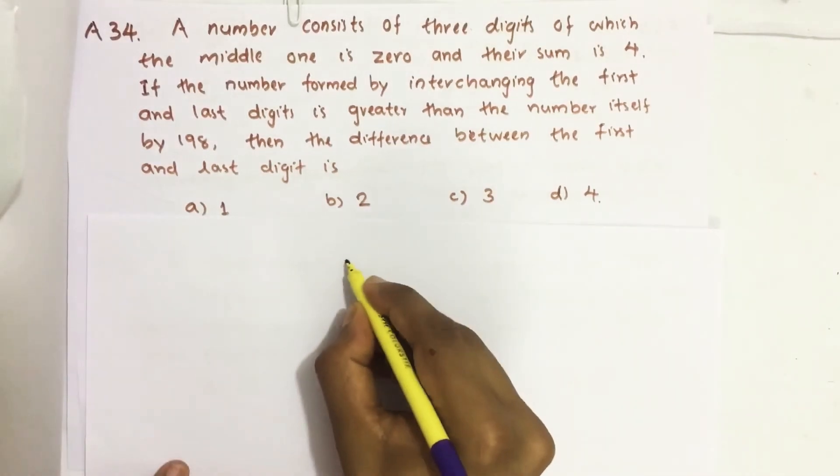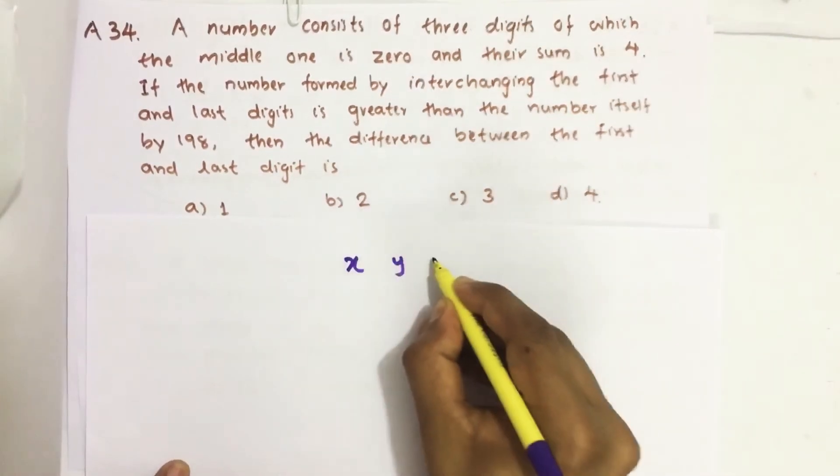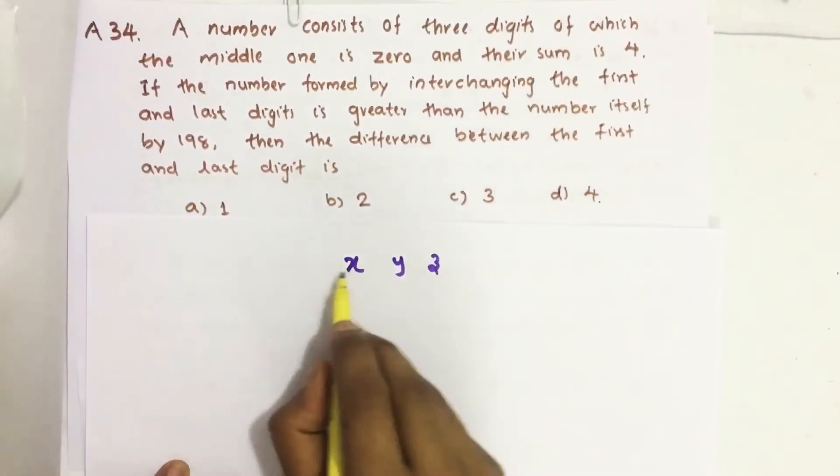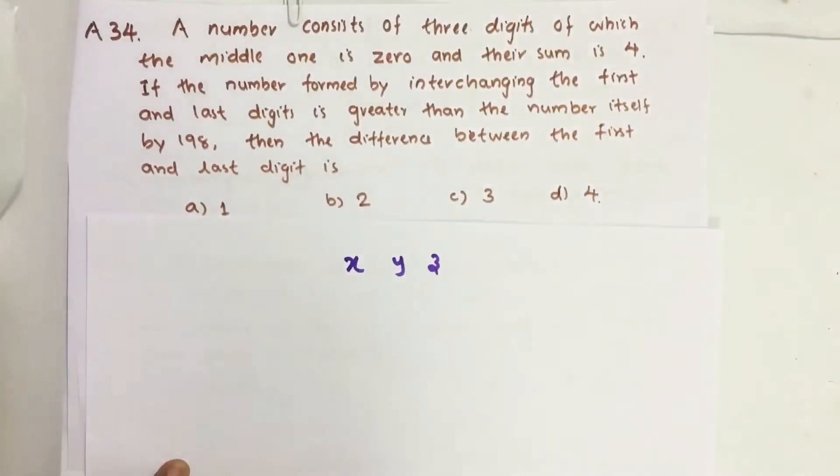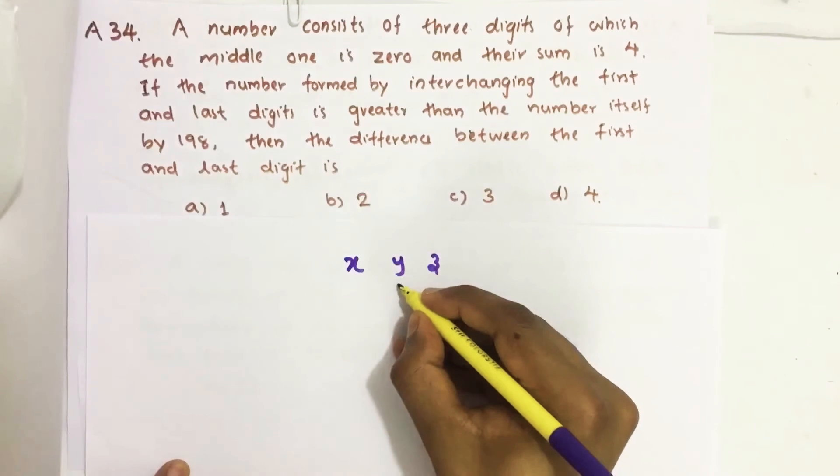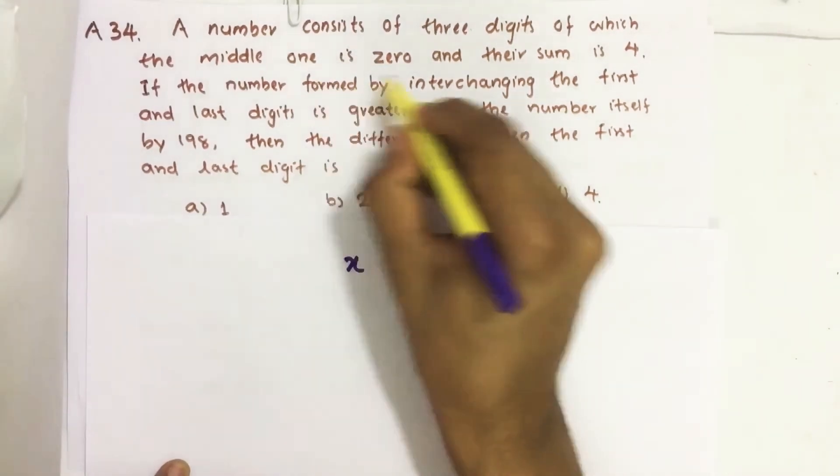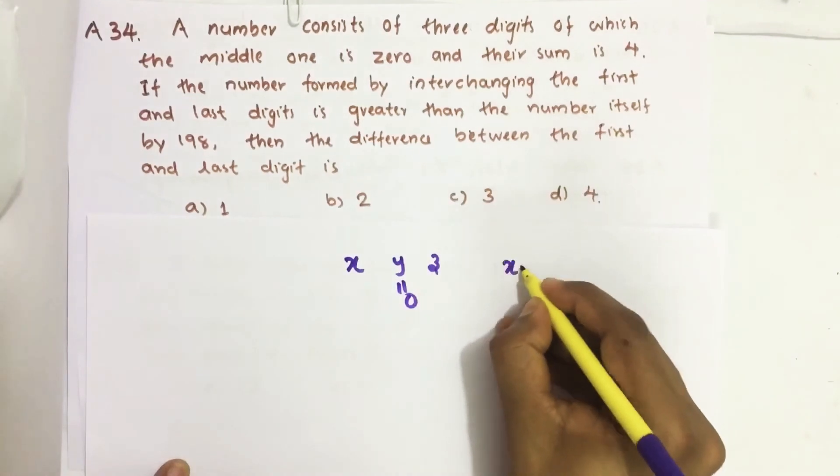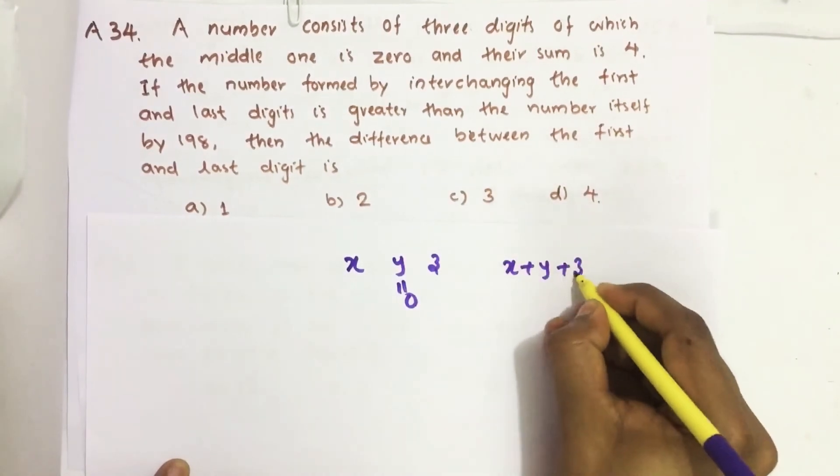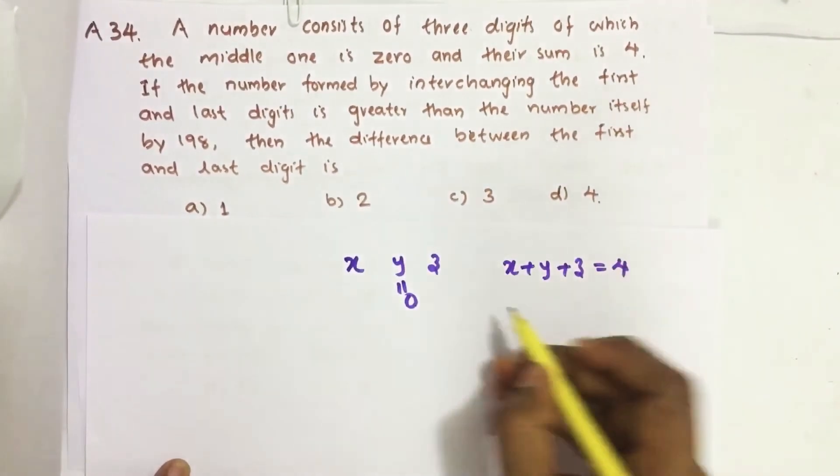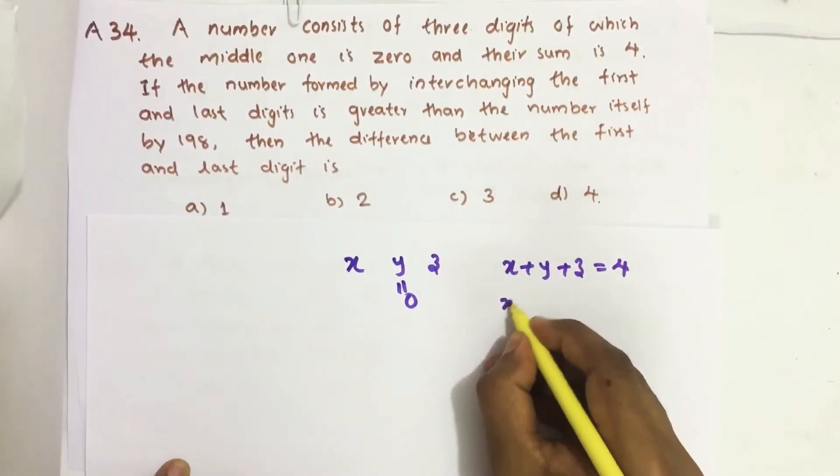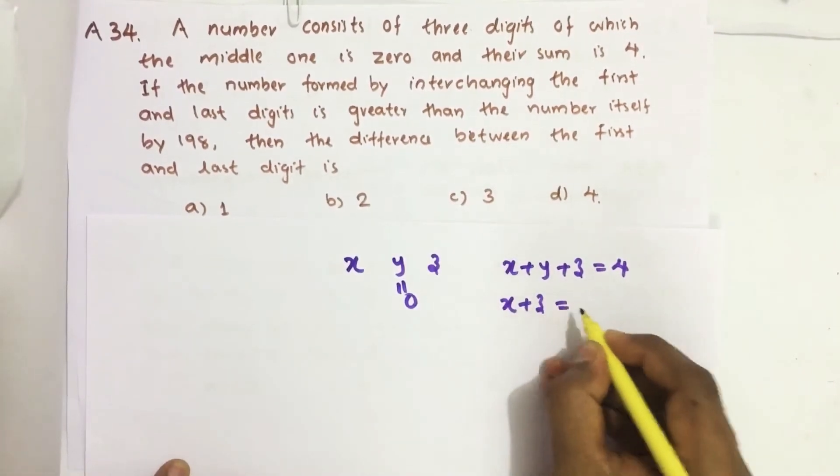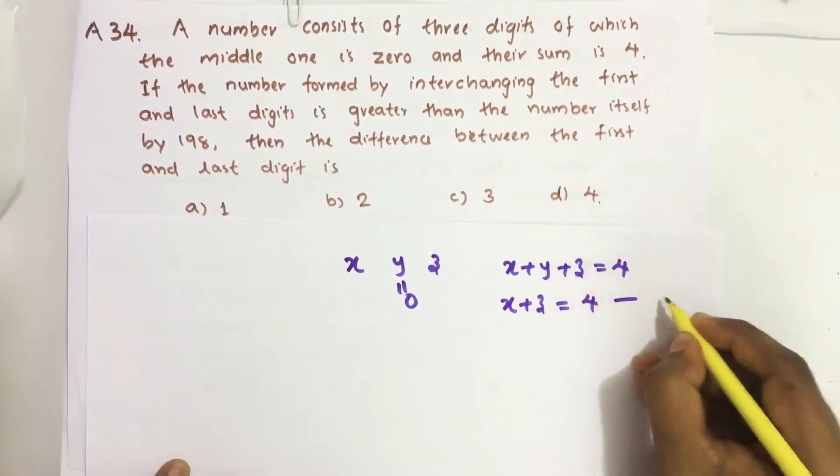Let x, y, z be the 3-digit number. The middle number y equals 0, it is given. And their sum is 4, that means x plus y plus z equals 4. But we know y equals 0, therefore x plus z equals 4. This is equation 1.